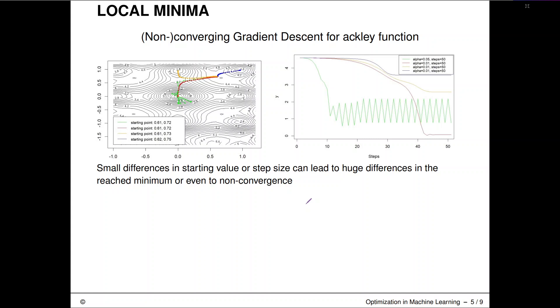Here's an example on another test function, the Ackley function. We have run a couple of traces of gradient descent starting from different points. You can see for the different traces that we either converge to such a local minimum here, to a guy here, to a guy here. Also, depending on step size, you might overshoot.